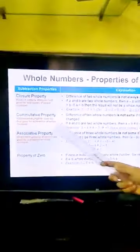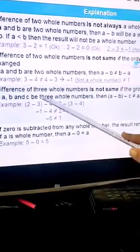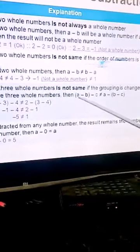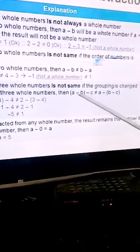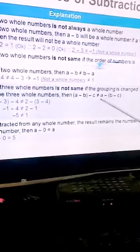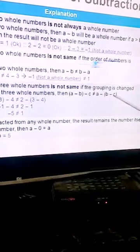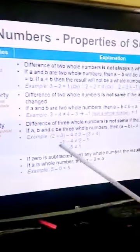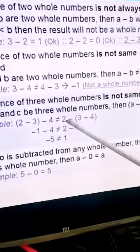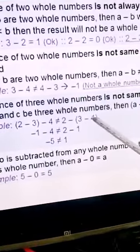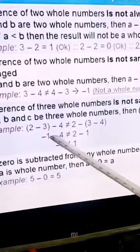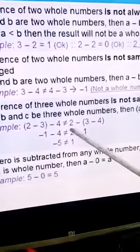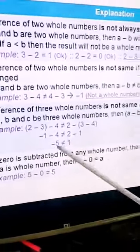Next we will see associative property. The difference of three whole numbers is not the same if the grouping is changed. If a, b, and c are three whole numbers, then (a−b)−c is not equal to a−(b−c). For example, (2−3)−4 is not equal to 2−(3−4): the left side gives negative five and the right side gives one.